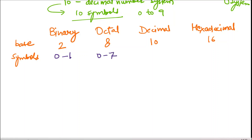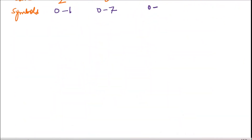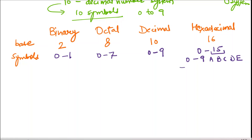The symbols for binary are 0 and 1. For octal, the symbols are 0 to 7. For decimal, the symbols are 0 to 9. For hexadecimal, the symbols are 0 to 9, and since 10 through 15 would be two-digit numbers, we use letters A, B, C, D, E, F for those — making a total of 16 symbols.